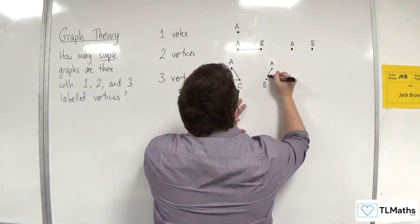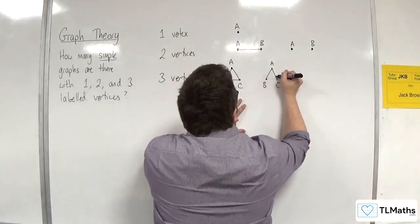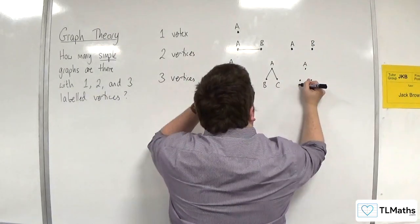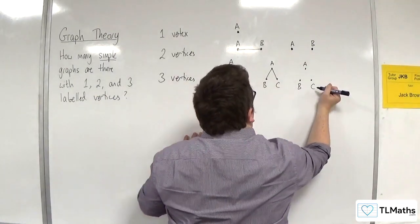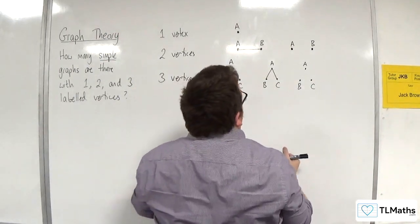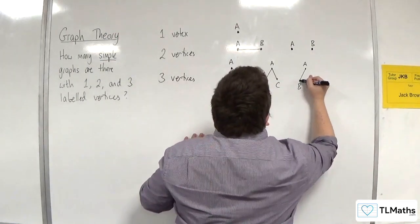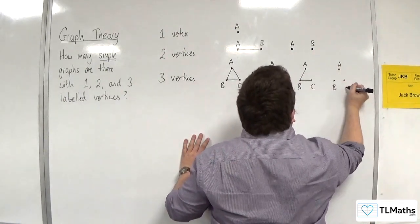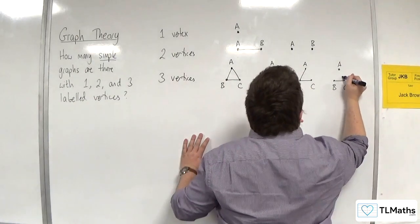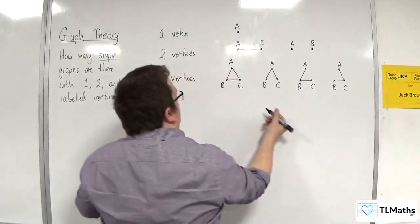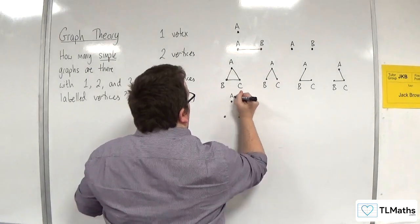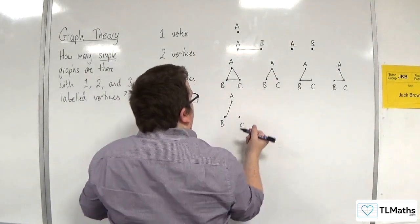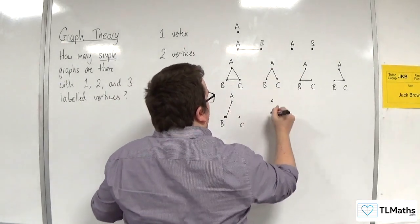Or, we could have A is connected to B, and A is connected to C, but B is not connected to C, or directly connected to C, I should say. Or, we could have this. Or, we could have this. Or, we could have that.